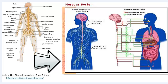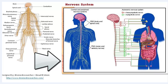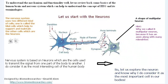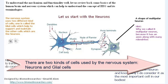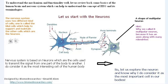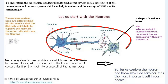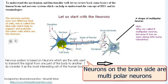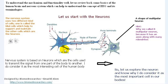The nervous system is organized into three basic functional and structural categories: the central nervous system, the autonomic nervous system, and the peripheral nervous system. It uses two different kinds of cells. One is called the glial cells, which help to support and maintain the other cells, which are the neurons — the diamond of the nervous system itself. The neurons in the nervous system, usually in the brain, are the multipolar neurons. It is called multipolar because it contains many dendrites as well as the axon.